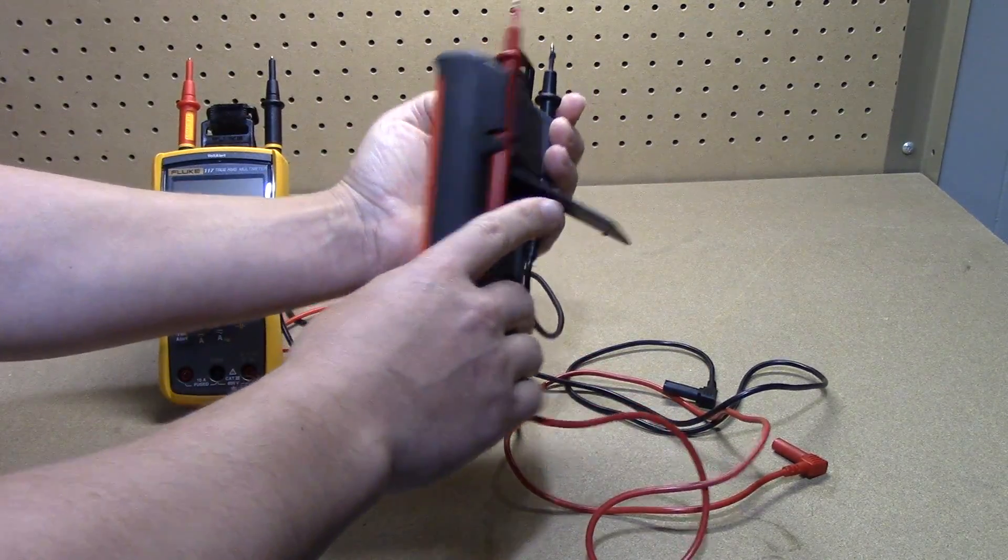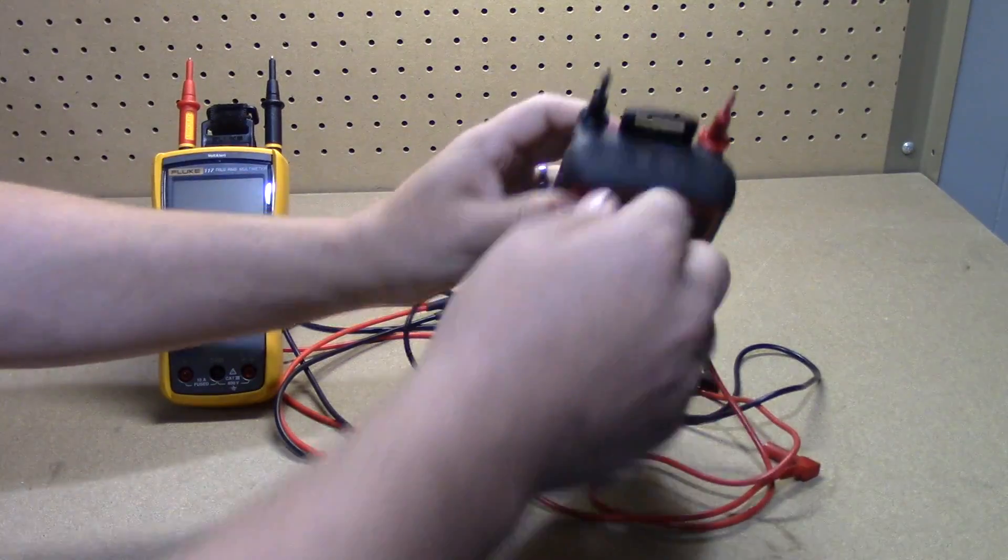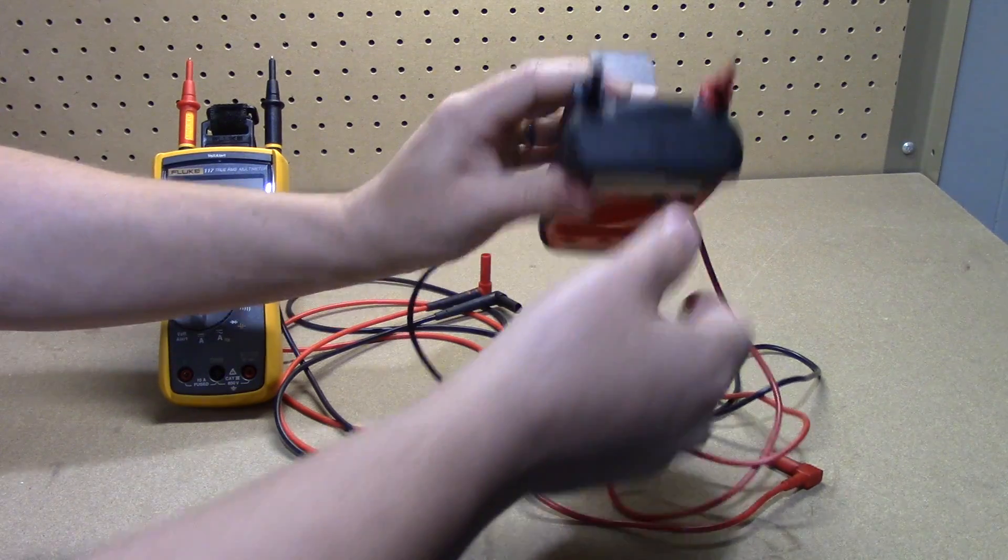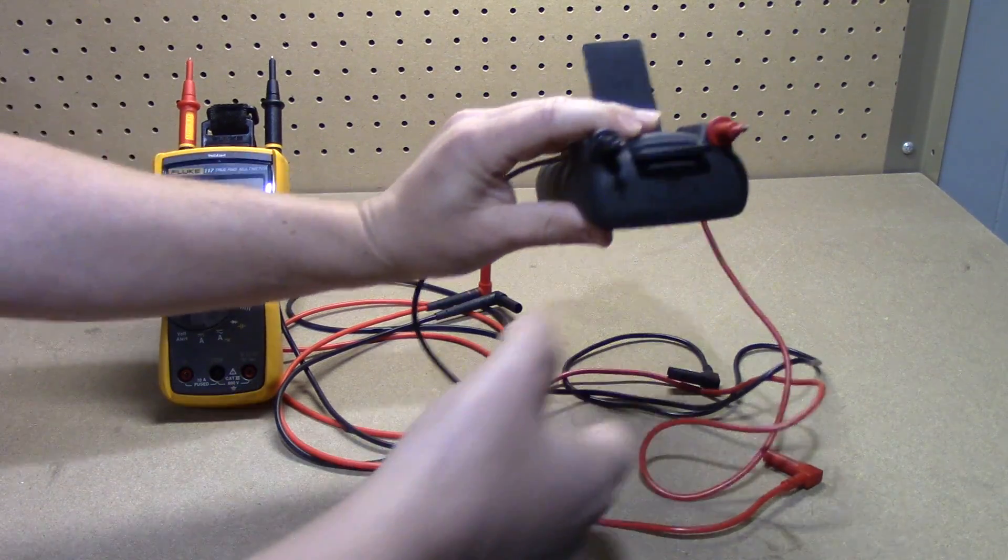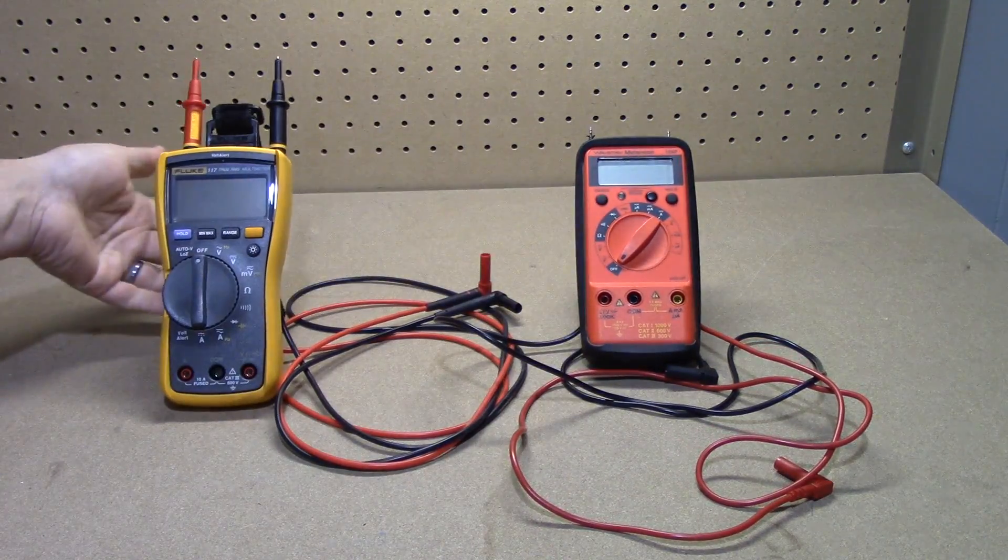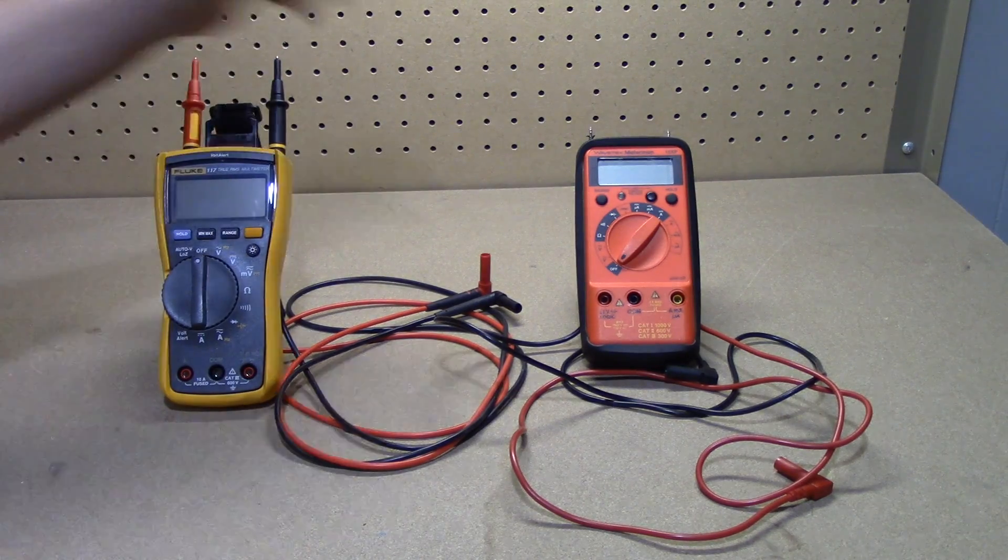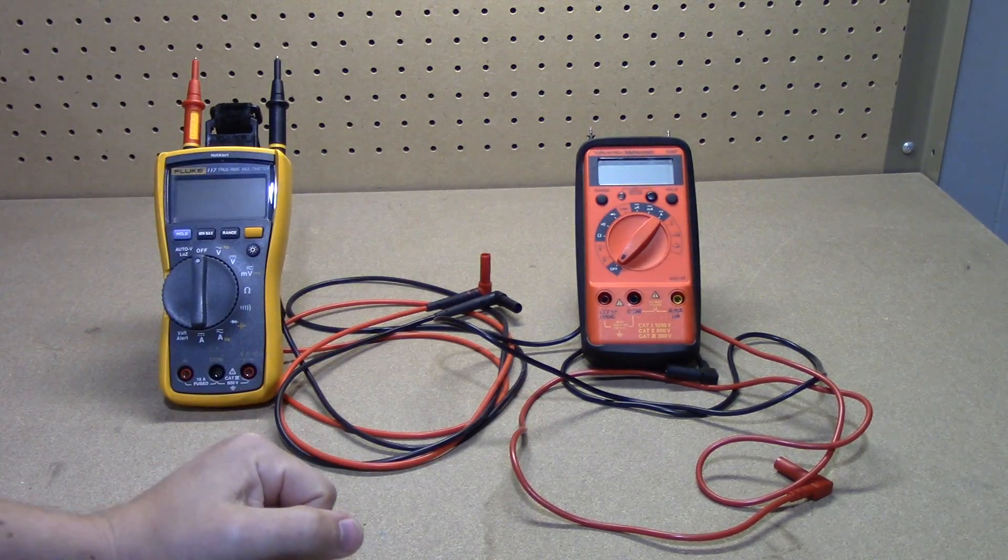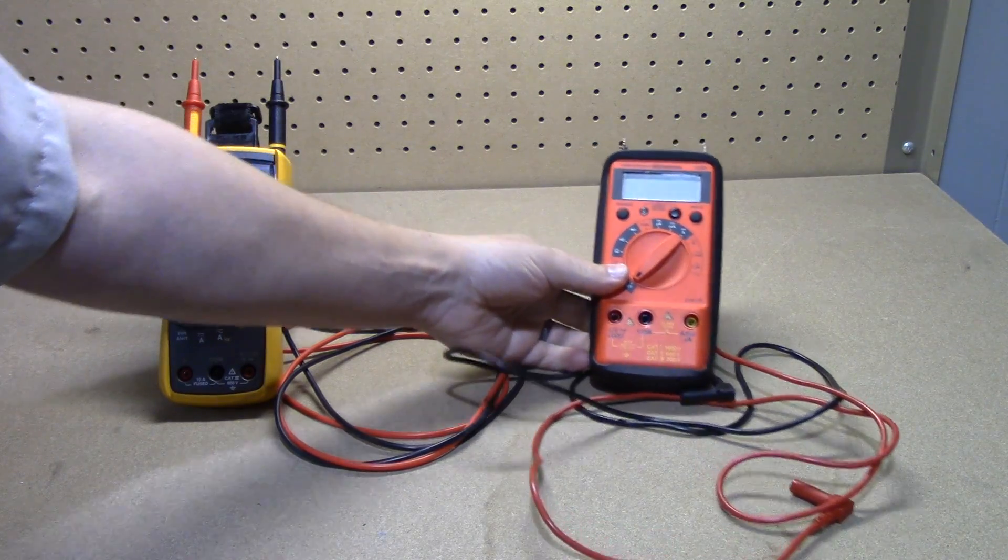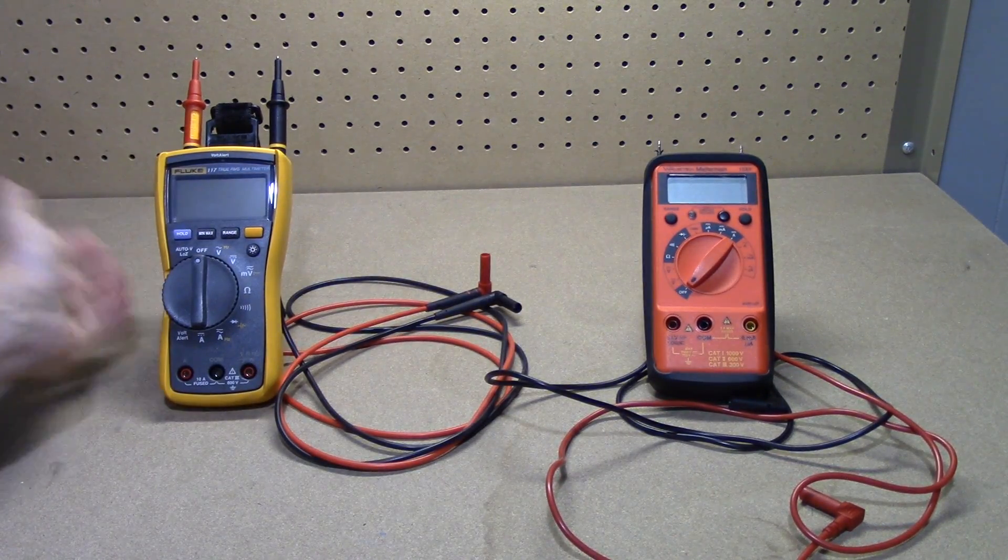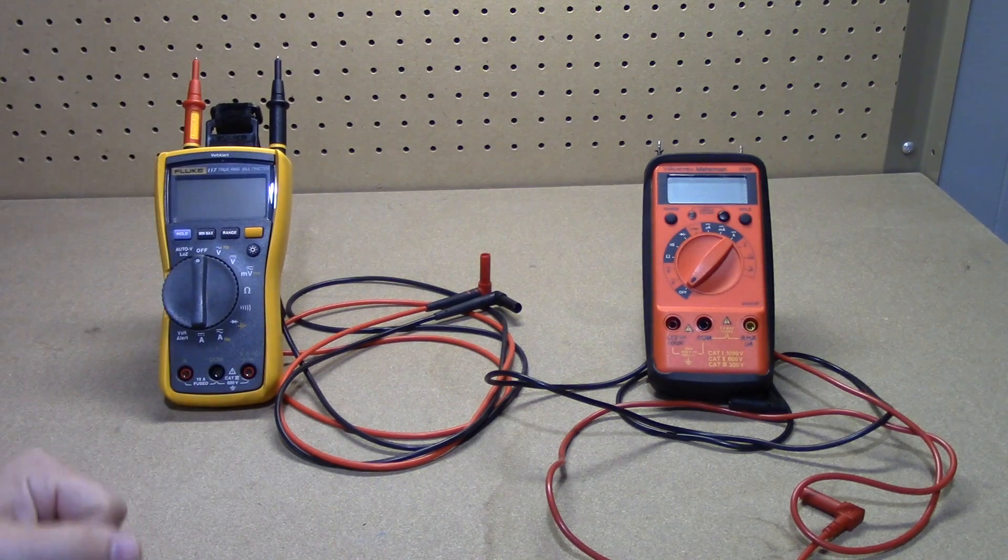It does still come with a nice little kickstand as you can see here, and it even has a little lip right there so if you had a magnetic accessory you could still hook it up. Now of course this one won't come with that magnetic accessory whereas the Fluke and the more premium one will come with that accessory.